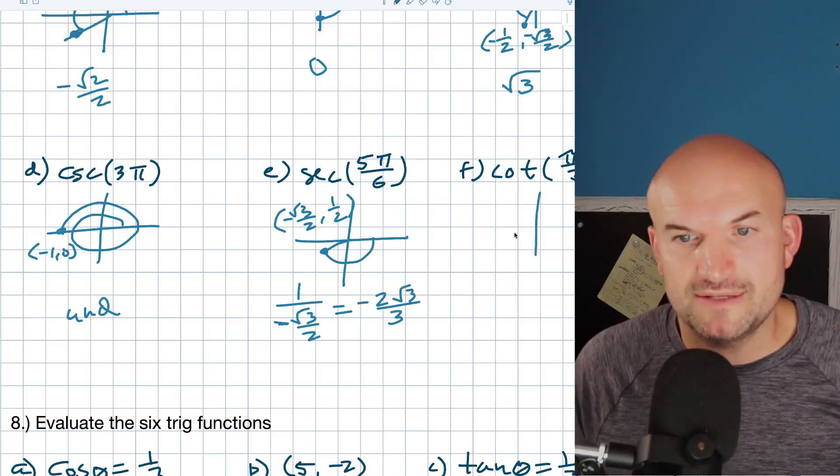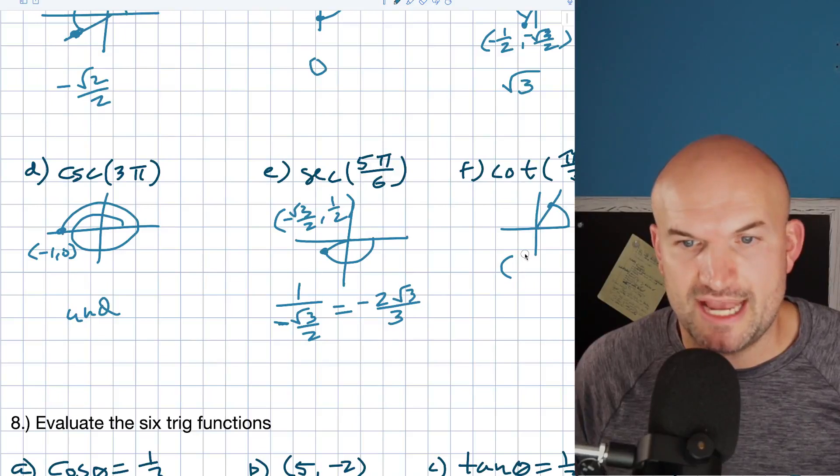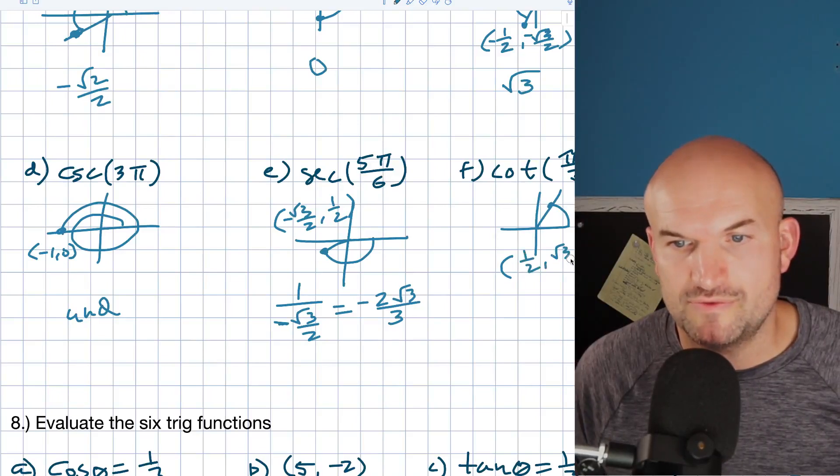And then cotangent of π over 3. So, π over 3 is right there. Again, that coordinate point here is going to be a 1 half, comma, a square root of 3 over 2.